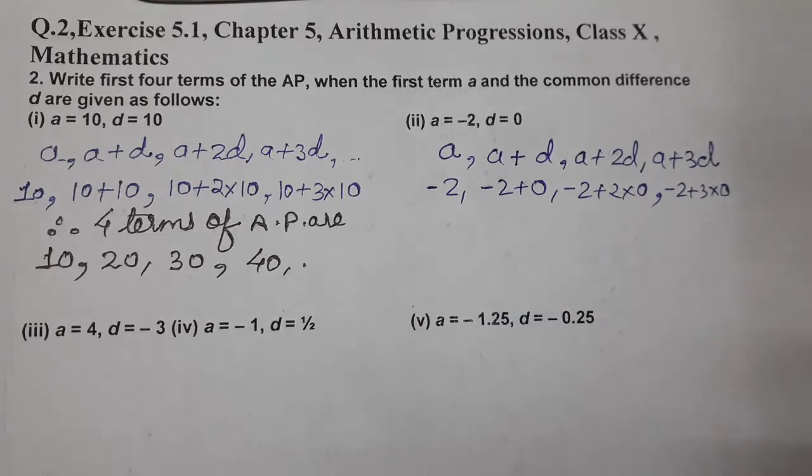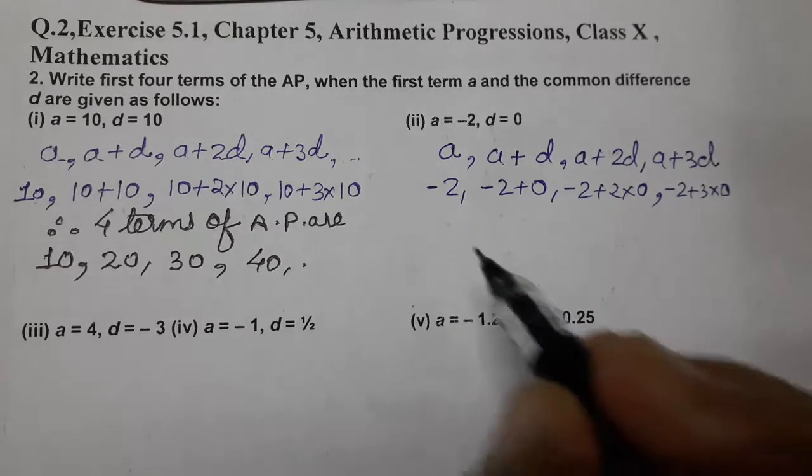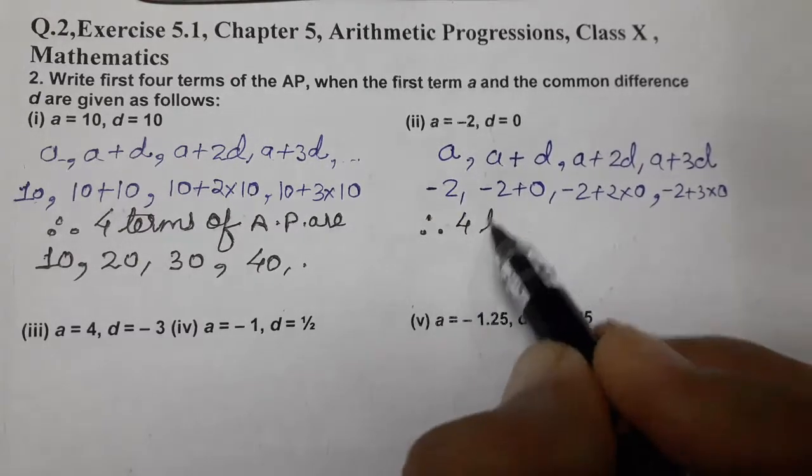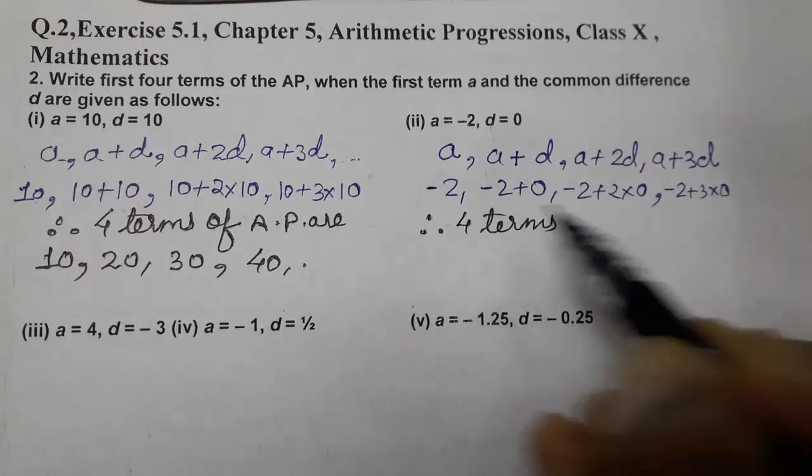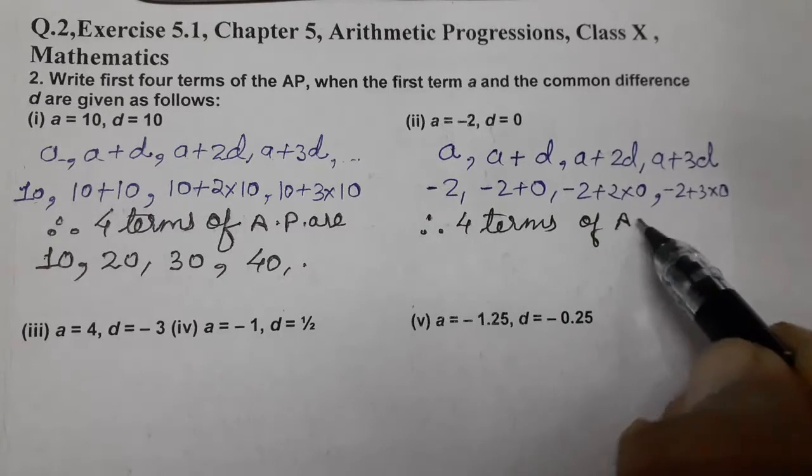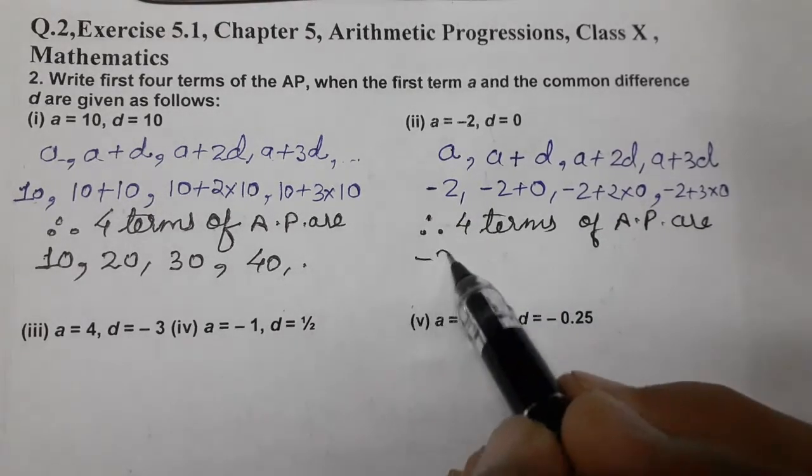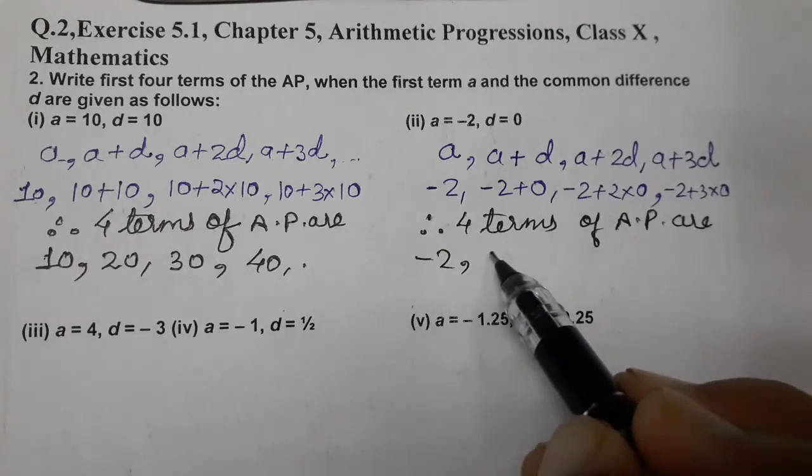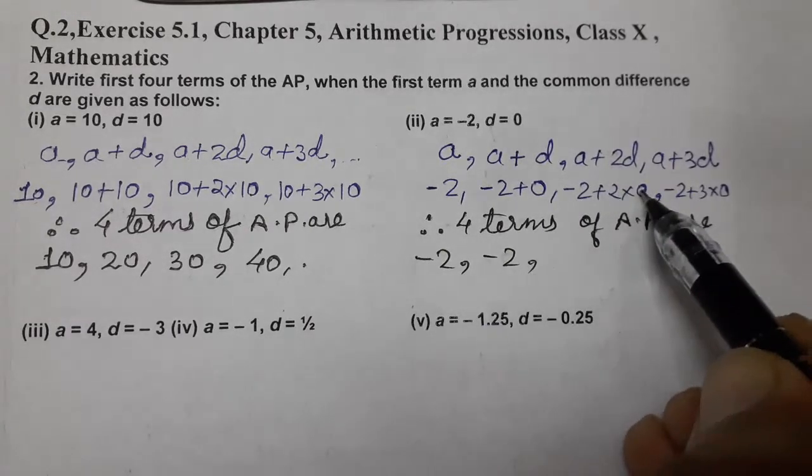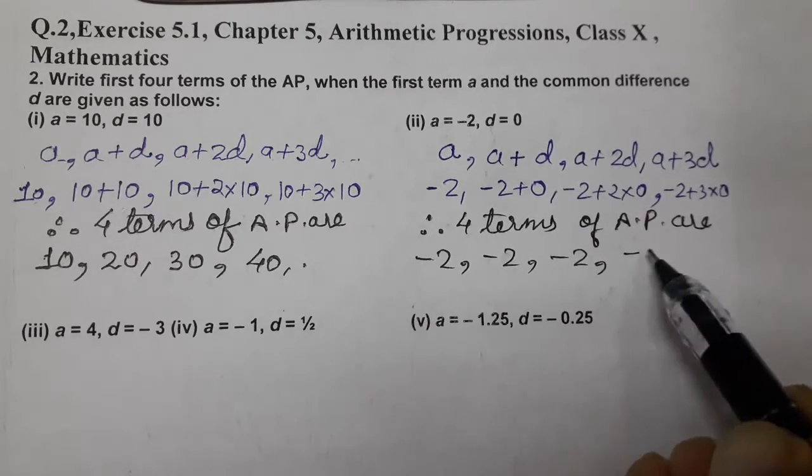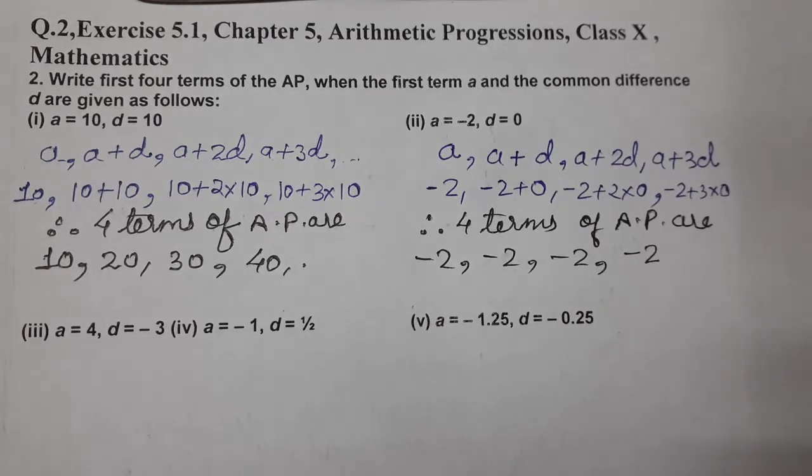So, what we get minus 2, therefore 4 terms of AP are, first minus 2, minus 2 plus 0, again minus 2, minus 2 and again minus 2. So, these are the 4 terms of AP.